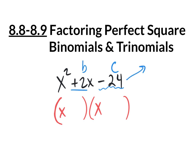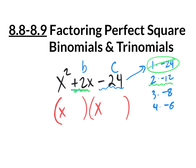I always recommend making a list of all possible multiples of negative 24: 1 times negative 24, 2 times negative 12, 3 times negative 8, 4 times negative 6. When you combine each pair, 4 plus negative 6 is negative 2 — we have a 2 but it's positive, so we need to flip the signs. That should be negative 4 and positive 6, and those get plugged into your blank spots.